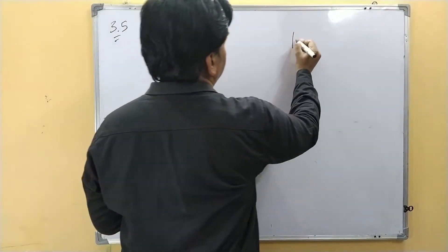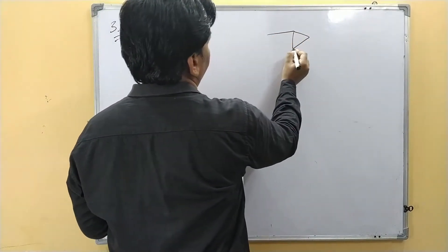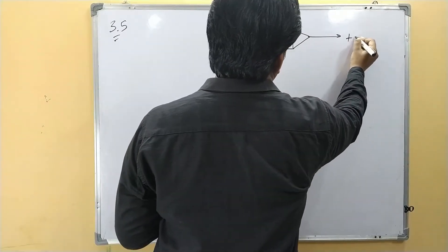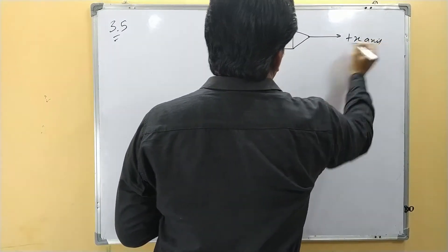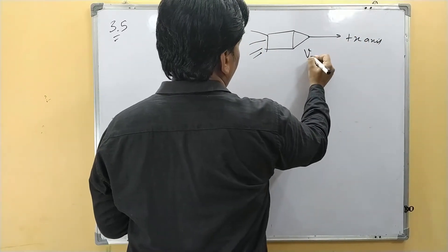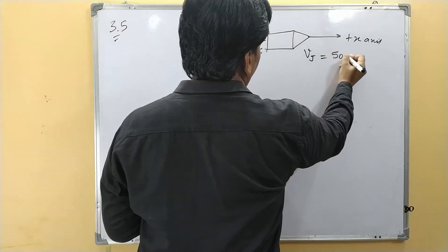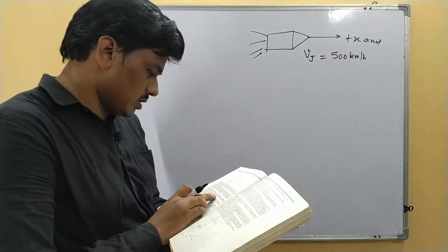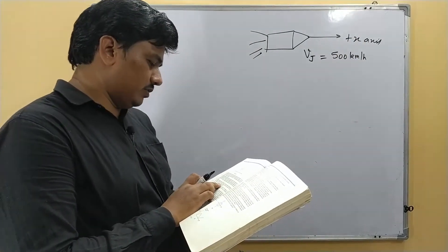So we assume that this is the jet plane which is going in the plus x-axis direction, positive x-axis, and the velocity of the jet plane is 500 km per hour.